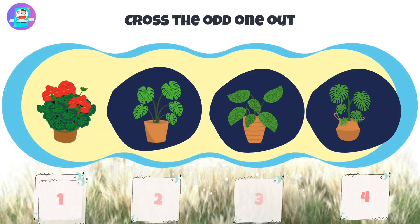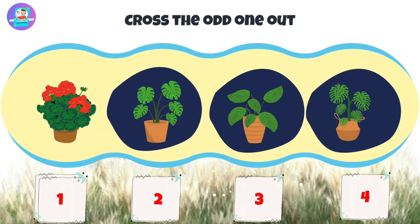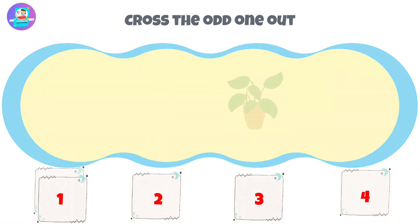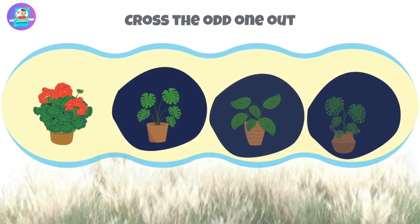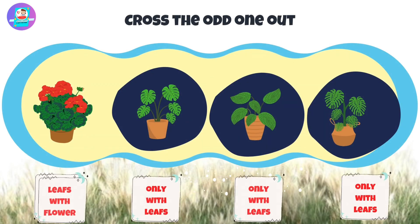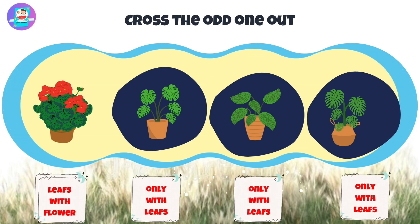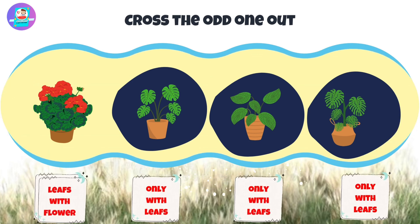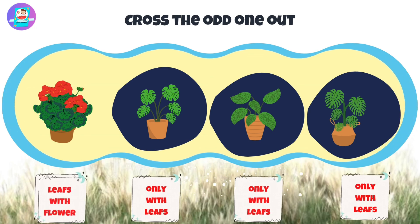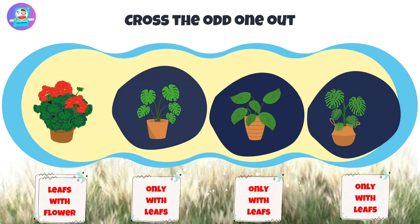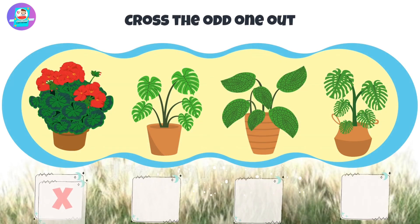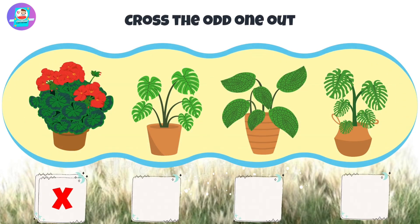Okay, let's check first. When we see here we have 3 pots with only leaves and 1 with leaves and flowers, that is odd. So put a cross on this one with leaves and flowers.